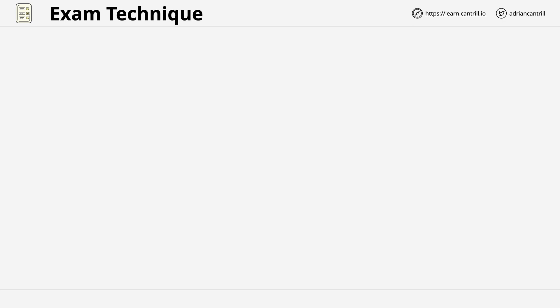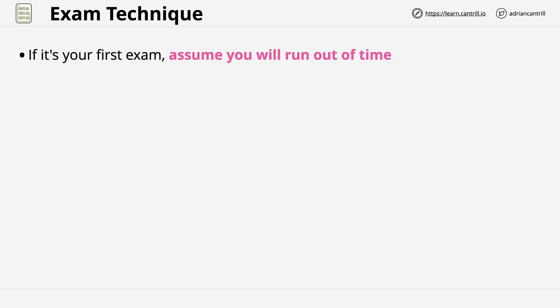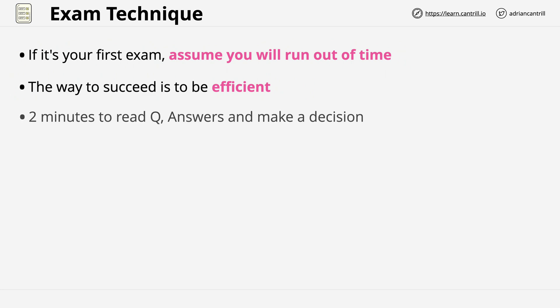Before we finish this lesson, just some final hints and tips based on my own experiences. First, if this is your first exam, assume that you're going to run out of time. Most people enter the exam without understanding the structure, and most people — myself included with my first exam — will run out of time. The way that you don't run out of time, and the way that you succeed, is to be efficient and have a process. Assuming you have the default amount of time, you need to be aware that you have two minutes to read the question, read the answers, and make a decision. It sounds like a lot, but it's not a lot of time to do all of those individual components.